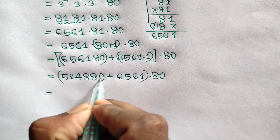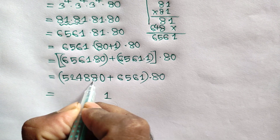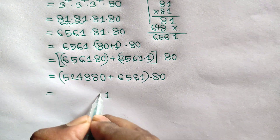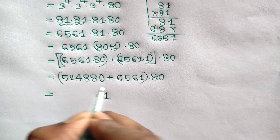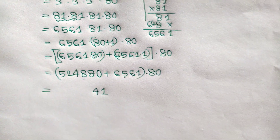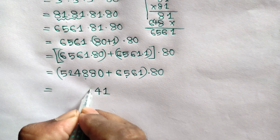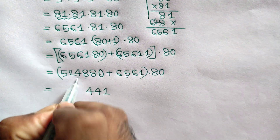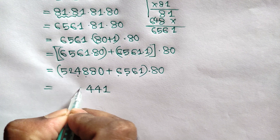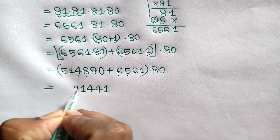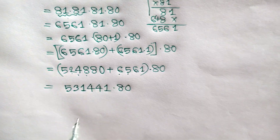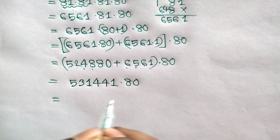1 plus 0 is 1. 8 plus 6 is 14, carry 1. 8 plus 5 is 13, plus 1 is 14, carry 1. 4 plus 6 is 10, plus 1 is 11, carry 1. 2 plus 1 is 3. So 6561 times 80 equals this result.